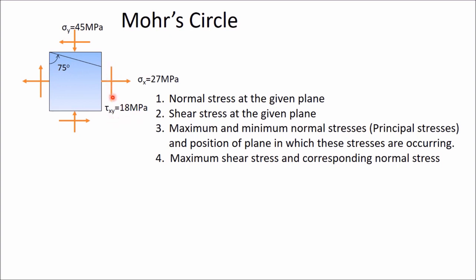When one shear stress is applied at one face, automatically at the opposite face another shear stress of the same magnitude will appear in the opposite direction. These two together form a couple, so to balance that couple, another two shear stresses in the perpendicular planes will occur with the same magnitude of 18 MPa. These are called complementary shear stresses.